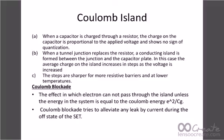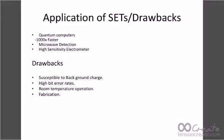Coulomb blockade is the effect in which electrons cannot pass through the island unless the energy in the system equals the Coulomb energy, which is equal to e² divided by the gate capacitance. Coulomb blockade helps to eliminate leakage current during the off state of the SET.